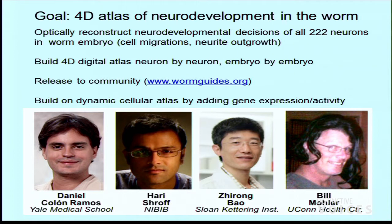We would also like to know where all the proteins are in this dynamic worm as it grows, and the activity of the worm — the neurons firing. I want to acknowledge my collaborators: this is a project between my lab at the NIH and three other labs — neuroscientist Daniel Colon-Ramos at Yale University, developmental biologist Zhurong Bao at Sloan Kettering, and developmental biologist Bill Moeller at Connecticut.